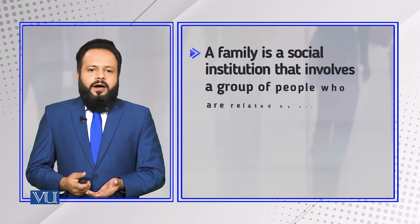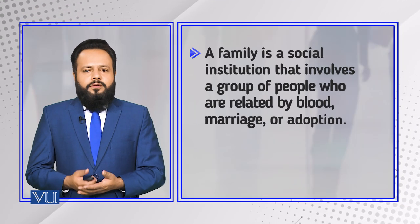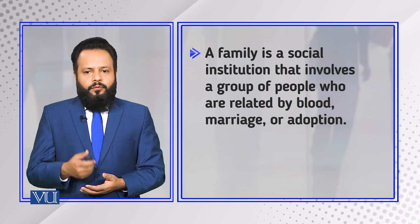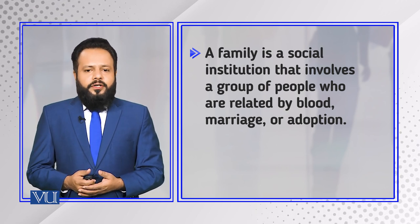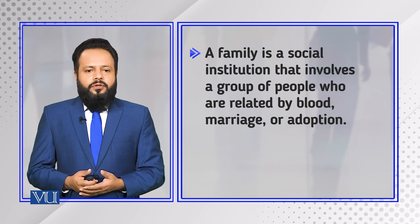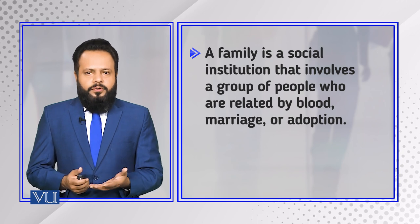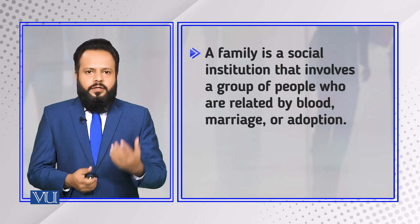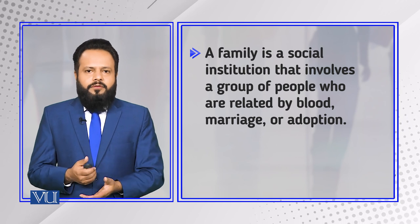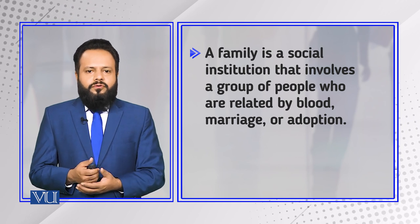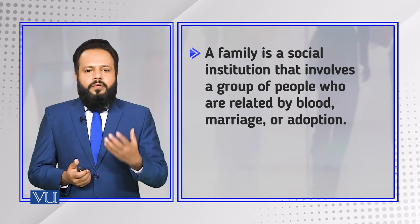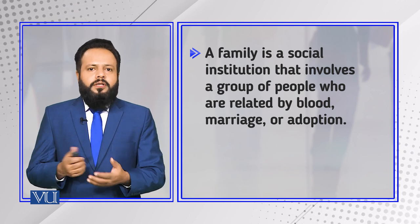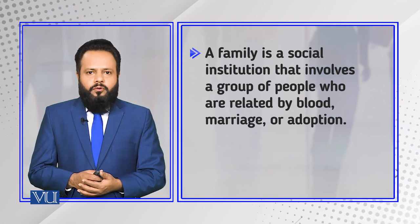Formally speaking, a family is a social institution that involves a group of people who are related by blood, marriage, and adoption. It is not necessary that family is defined only by birth — blood, birth, marriage, and adoption, these three things can be included.